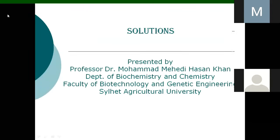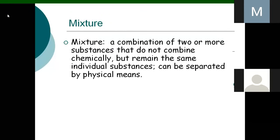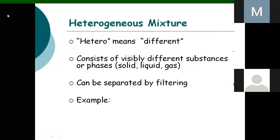So we will go about this topic, which is about solution. We need to understand what is a mixture. A mixture is a combination of two or more substances that do not combine chemically, but the individual substances can be separated by physical means. There are two types: heterogeneous and homogeneous.